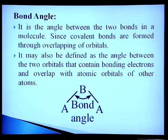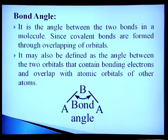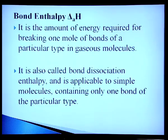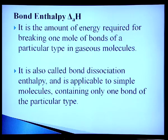Bond angle is the angle between two bonds in a molecule. Since covalent bonds are formed through overlapping of orbitals, it may also be defined as the angle between two orbitals containing bonding electrons that overlap with orbitals of other atoms. Bond enthalpy is the amount of energy required to break one mole of bonds of a particular type in a gaseous molecule. It is also called bond dissociation enthalpy.